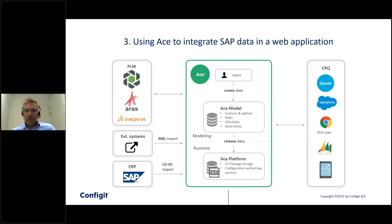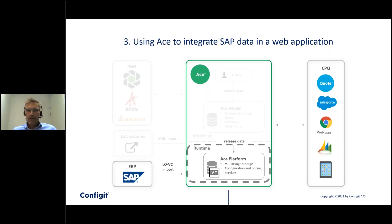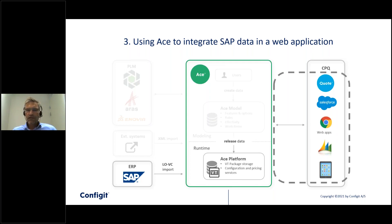One way to address this problem is to use Configured ACE between your SAP system and your end applications. In this solution, you first import all the necessary data from SAP using the ACE SAP extractor. You then compile the extracted data into a self-contained package called a VT package, where you basically get all the configuration and pricing data from SAP stored in a form that can be understood by ACE. And finally, you use the ACE configure and pricing APIs to access that SAP data in the VT package and make it available in a web application or integrated with an external system. Let's take a closer look at how each of these different elements work.